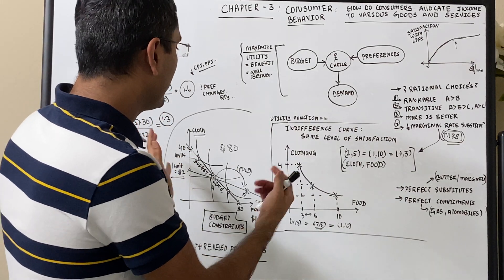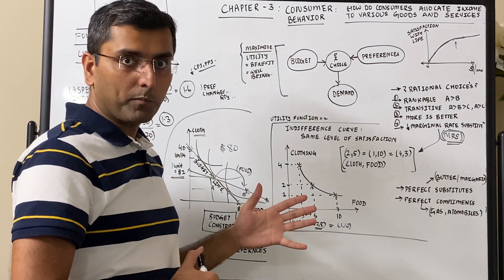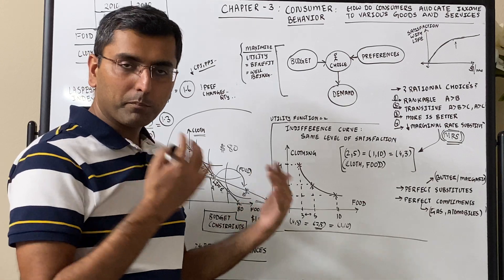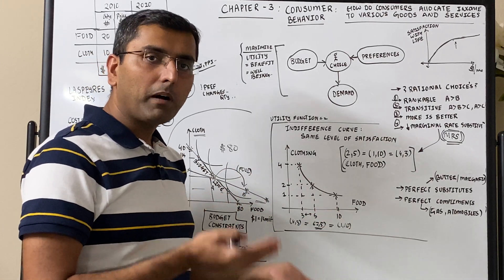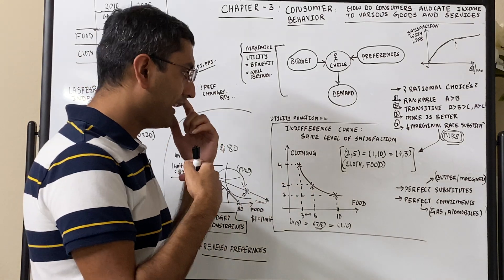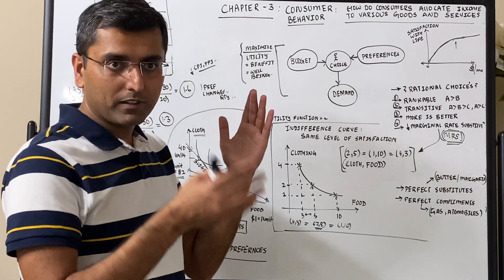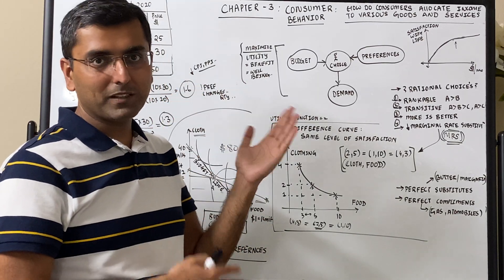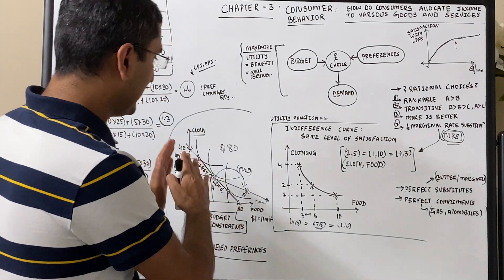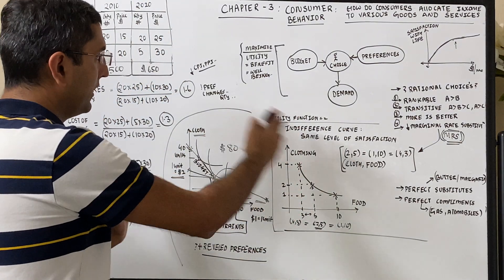There are perfect substitutes and perfect complements in terms of goods. Perfect substitutes are like butter and margarine — their quantity and demand move together. Complements are like automobiles and gasoline — if the gasoline price goes up, automobile sales typically go down. Substitutes and complements are important to remember when drawing preferences, budget, and demand forecasting.